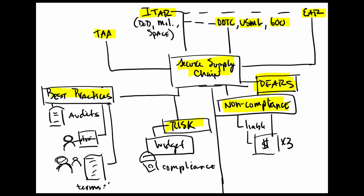That was a basic overview of secure supply chain, ITAR, TAA, DDTC, USML, Series 600, EAR, DFARS — all of these things that impact export and import, and all the rules needed to do business within the federal government.